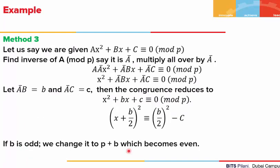The third method uses inverses. Given ax² + bx + c ≡ 0 mod p, we find the inverse of a modulo p, call it ā. We multiply both sides of the congruence by ā, giving āa·x² + āb·x + āc ≡ 0 mod p. Since āa ≡ 1 mod p, this simplifies to x² + b̄x + c̄ ≡ 0 mod p, where b̄ = āb and c̄ = āc.